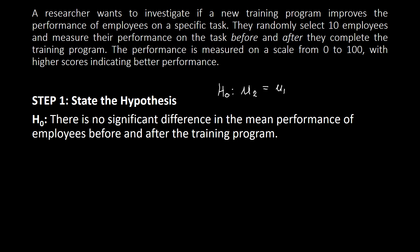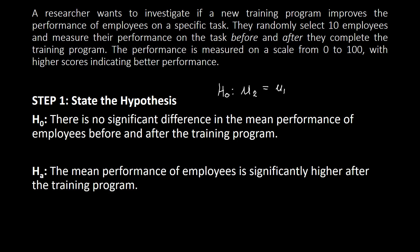Our alternative hypothesis, because we wanted to investigate if that training program will be improving the performance of the employees, is: the mean performance of employees is significantly higher after the training program. In symbol, Hₐ: μ₂ > μ₁, where μ₂ is the after-training mean and μ₁ is the before-training mean.